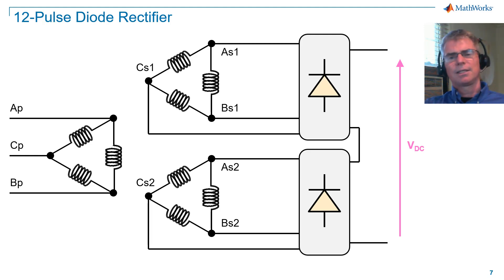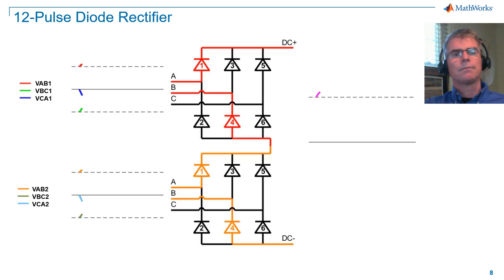In this case, the secondary windings are the same and are configured as delta D1. Let's take a look at what happens with this architecture. At the top left, we have the line voltages of the upper secondary. And at the bottom left, we have the line voltages of the lower secondary.